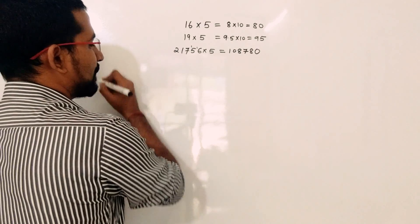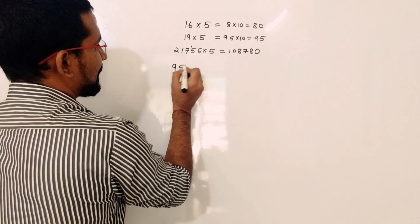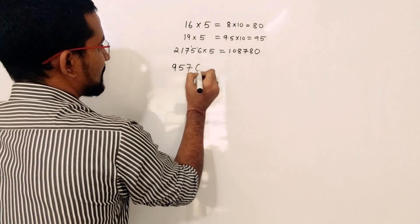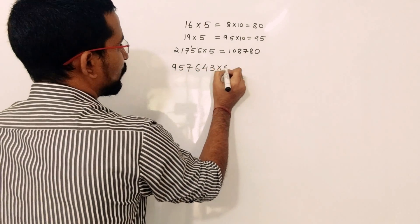Now suppose you want to multiply 957,643 by 5. Again, divide this value by 2.